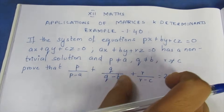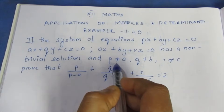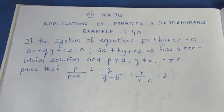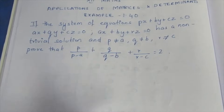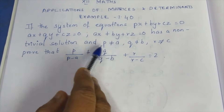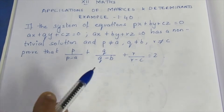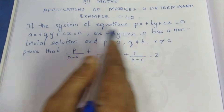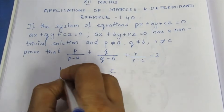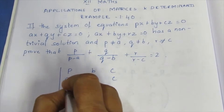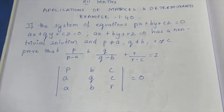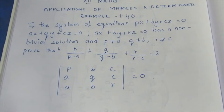For the system to have a non-trivial solution, the determinant value must equal zero. We set up the determinant with coefficients: row 1 is P, B, C; row 2 is A, Q, C; row 3 is A, B, R. This determinant equals zero.